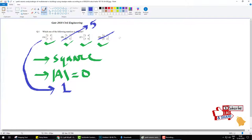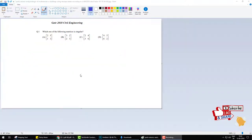If we determine the determinant of option D: 4 into 2 is 8 minus 6 into 3 is 18, minus 10 is the determinant. And for option C, if we calculate the determinant: 2 multiply by 6 is 12 minus 3 multiply by 4 is 12, so it equals 0. This means the C option is correct.